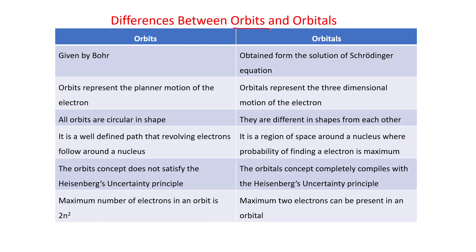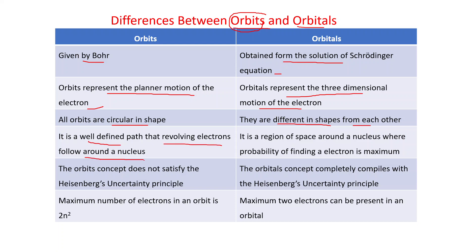Key differences between orbits and orbitals: Orbits were given by Bohr; orbitals come from solutions of the Schrödinger equation. Orbits represent planar motion; orbitals represent three-dimensional motion. All orbits are circular; orbitals have different shapes. An orbit is a well-defined path; an orbital is a region of space where the probability of finding the electron is maximum. The orbit concept does not satisfy the Heisenberg uncertainty principle, while the orbital concept does. Maximum electrons in an orbit = 2n²; maximum electrons in an orbital = 2.